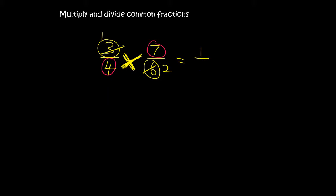So at the moment we have 1 over 4 multiplied by 7 over 2. Now that we have simplified as much as we can, we multiply the top by the top and the bottom by the bottom. So the top times the top is 7 and the bottom times the bottom is 8.